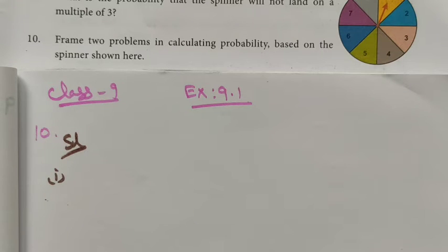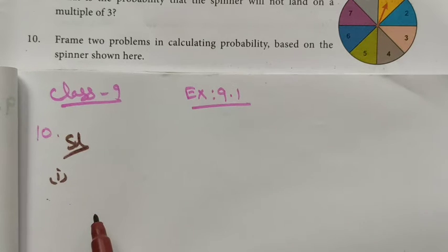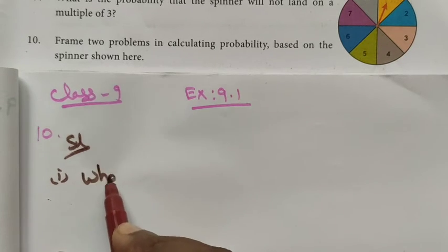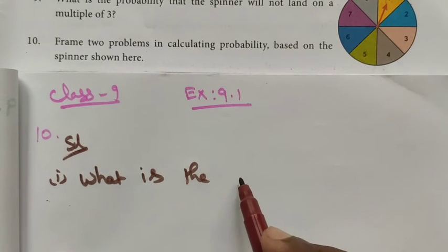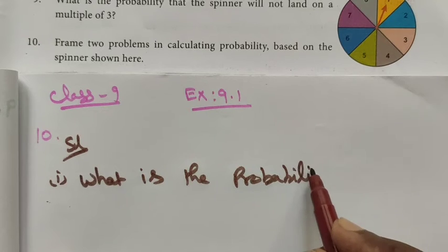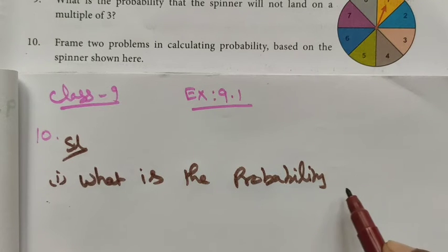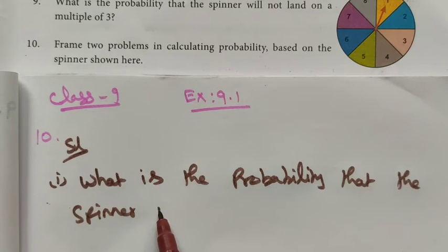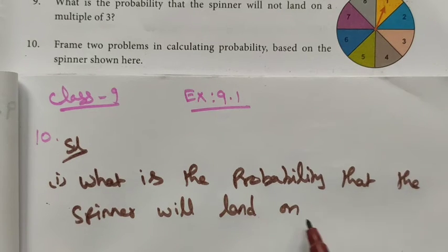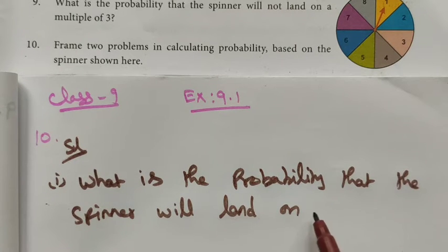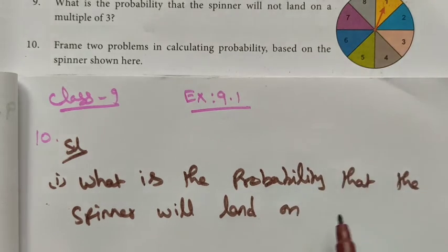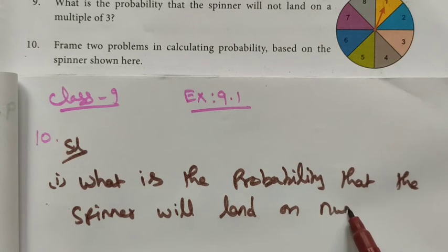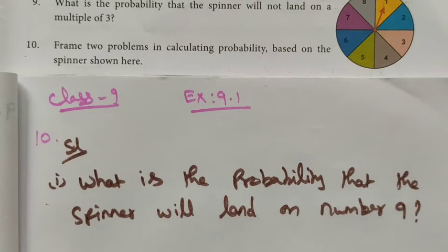For example, let me take: what is the probability that the spinner will land on number 9? Number 9 is not there on the spinner, so it is an impossible event. We can frame this type of question also.